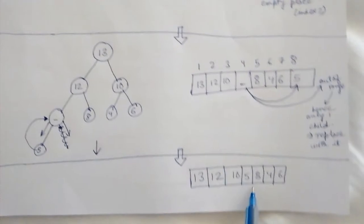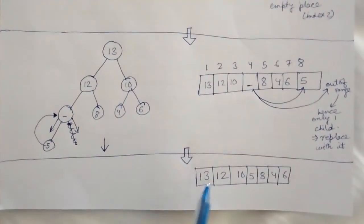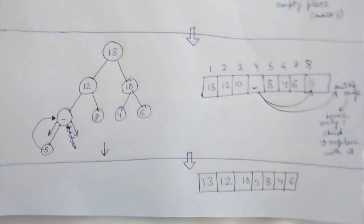Now our final array looks something like this, and the pictorial representation of the array—that is, the tree shape representation of our heap—is left as homework. Thank you.